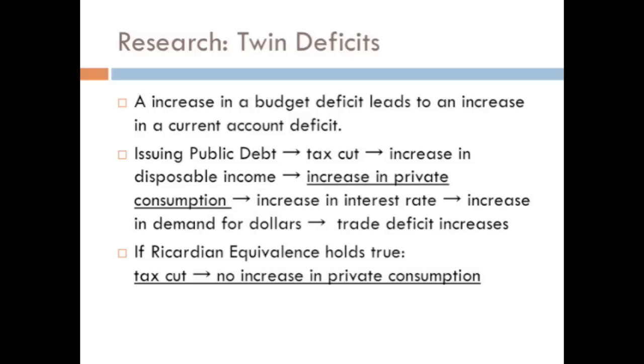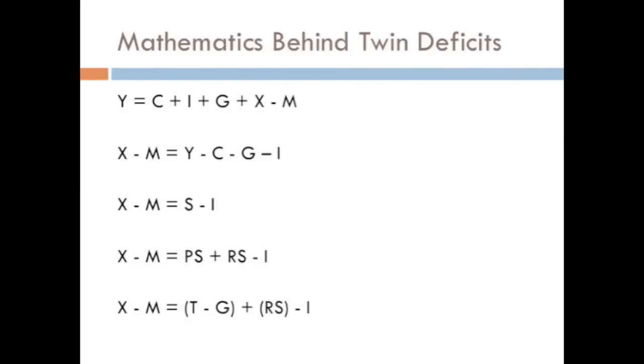If the Ricardian equivalence holds true, though, tax cuts would not increase consumption. Now let's look at the math. As you can see from the third equation down, the current account equals savings minus investment (X - M = S - I). Savings can be split up into public savings and private savings (X - M = PS + RS - I). This means that when private savings equals investment, or they're really close to each other, the current account equals the budget deficit.